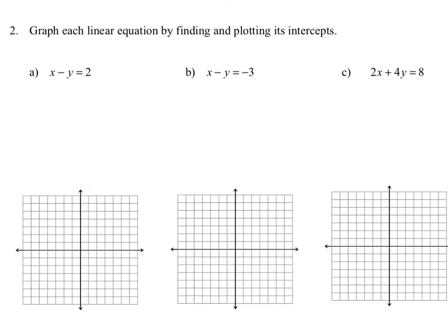Here we want to graph each linear equation by finding and plotting its intercepts. We begin with finding the x-intercept. The x-intercept happens when y is equal to 0. We take our original equation and replace the y with 0 to get x minus 0 is equal to 2, and that simplifies to x equals 2. So the ordered pair that corresponds to that is (2, 0).